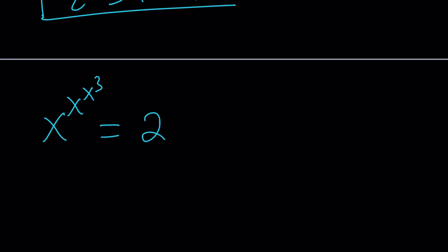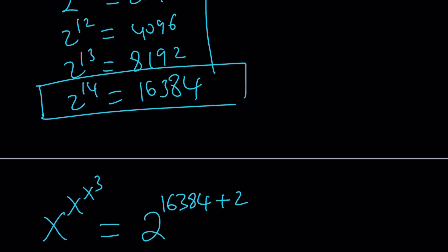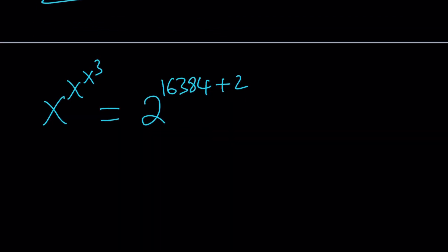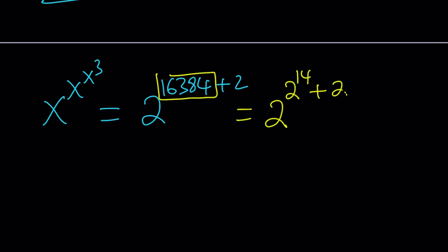We rewrite 16,386 as 16,384 plus 2. Since 16,384 is 2 to the 14th power, we replace it: the exponent becomes 2 to the power 14 plus 2 to the first power. Now when exponents are added, you can turn it into multiplication. So we write this as 2 to the power 14 times 2 to the power 2.